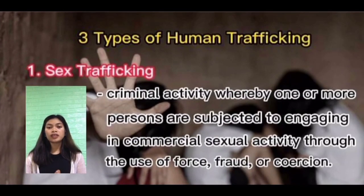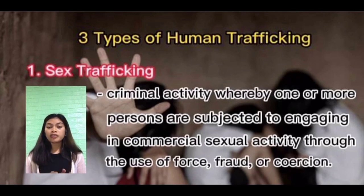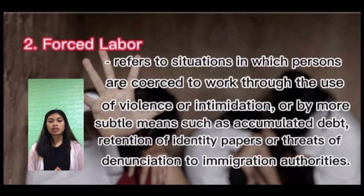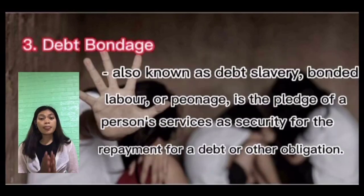There are three types of human trafficking. The first is sex trafficking — a criminal activity where one or more persons are subjected to commercial sexual activity through the use of force, fraud, or coercion. The second is forced labor, which refers to a situation in which persons are coerced to work through the use of violence or intimidation, or by simpler means such as accumulated debt, detention of identity papers, or threats of denunciation to immigration authorities.